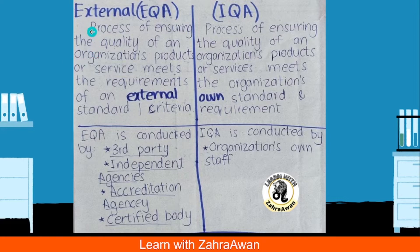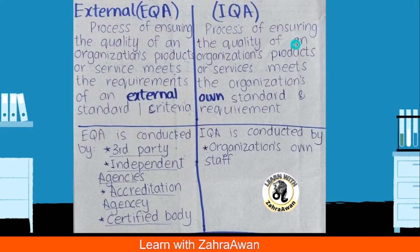External quality assurance or quality assessment — assessment and assurance refer to the same thing — is the process of ensuring that the quality of an organization's products or services meets required external standards and criteria. External quality assurance means we ensure that any organization or industry's product meets our standards, but the assurance is external. Internal quality assurance means we ensure that any industry meets the quality of an organization based on its own internal standards and requirements. I hope their definitions are clear.